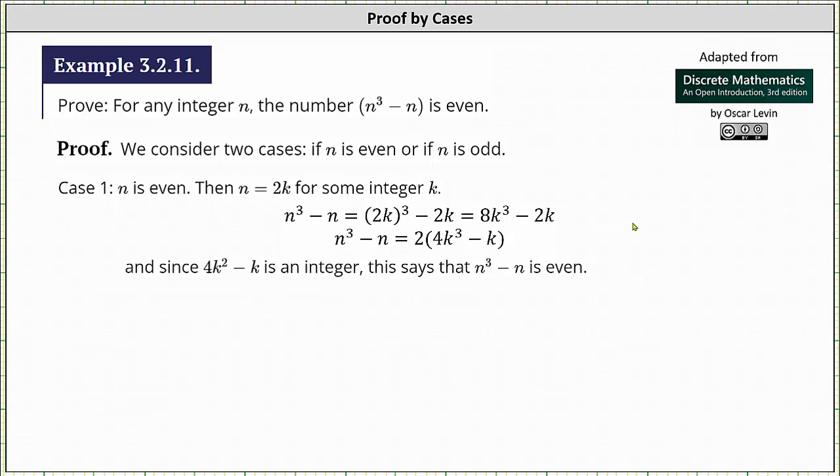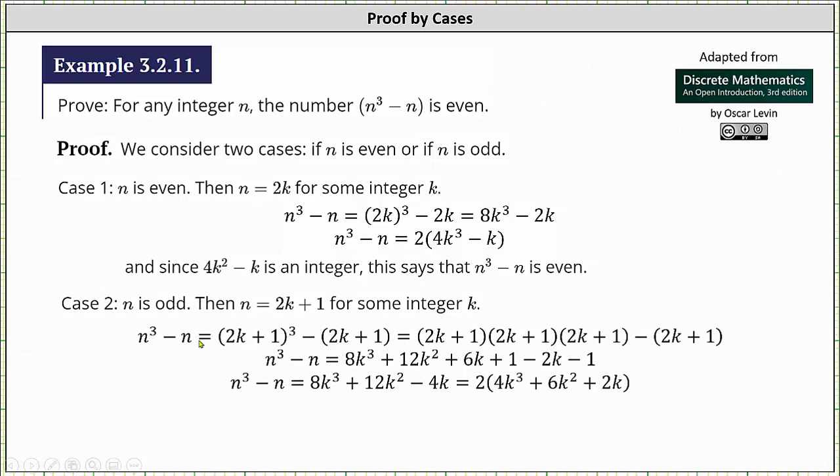Now we move on to case two, where n is odd. Then n is equal to 2k + 1 for some integer k. And we go through the process again. n³ - n is equal to the cube of 2k + 1 minus the quantity 2k + 1. There are no shortcuts for cubing the quantity 2k + 1. We have three factors of 2k + 1.